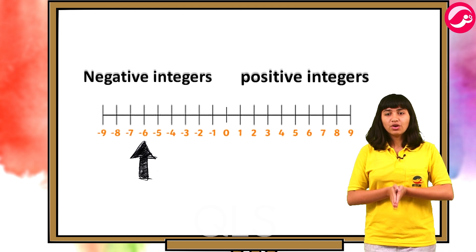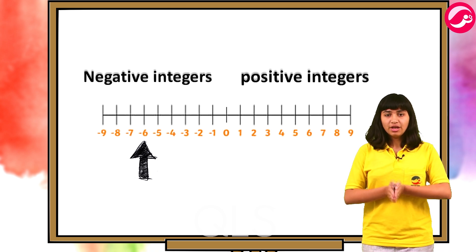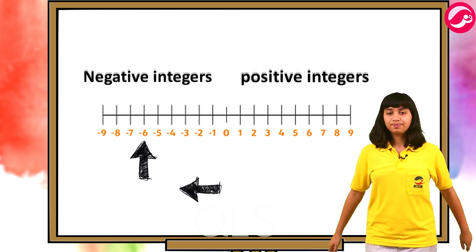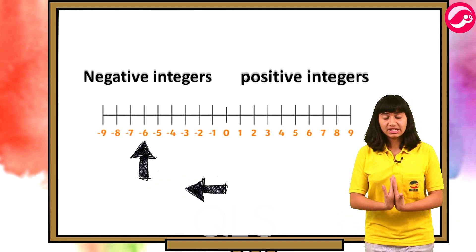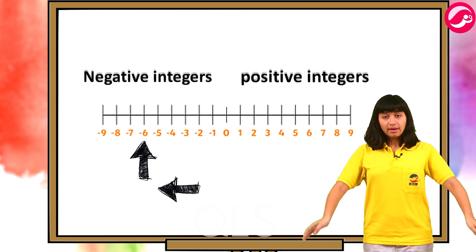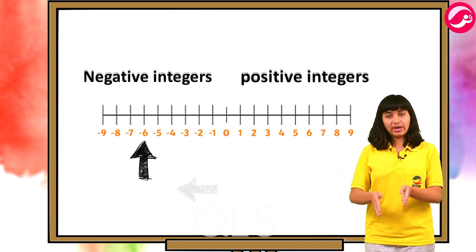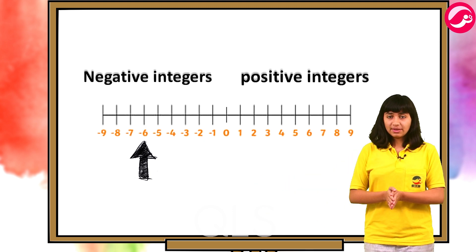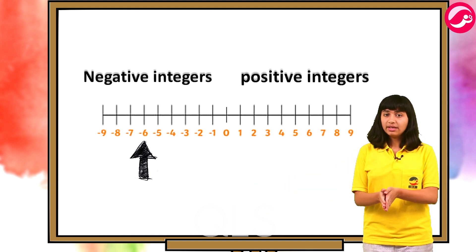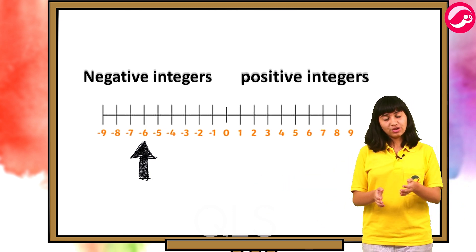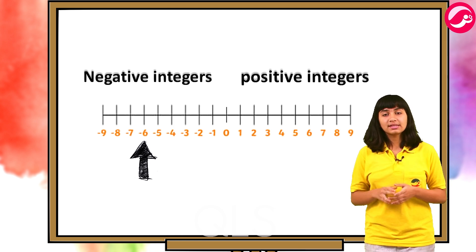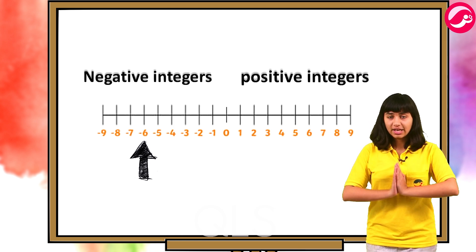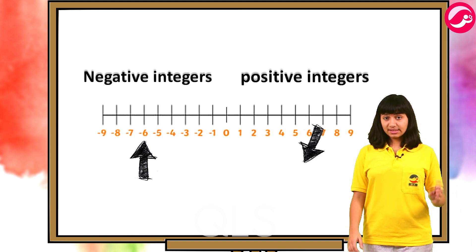In order to mark minus six on the number line, we move six points towards the left of zero. Yeh number line hai, yeh zero hai, one, two, three, four positive numbers right side mein aur minus one, minus two, minus three, minus four negative numbers left side mein. Ab mujhe minus six ko represent karna hai.